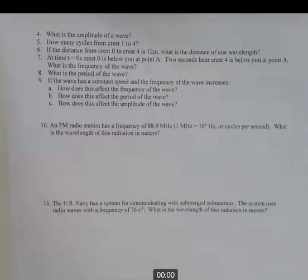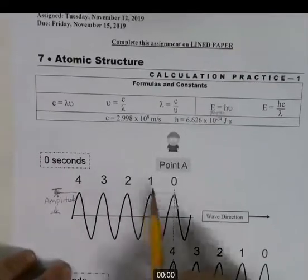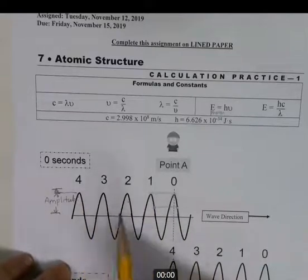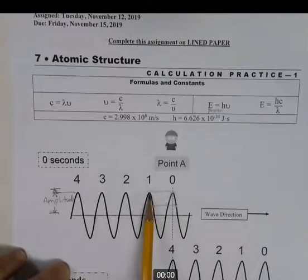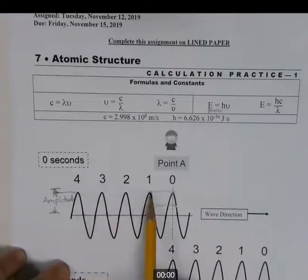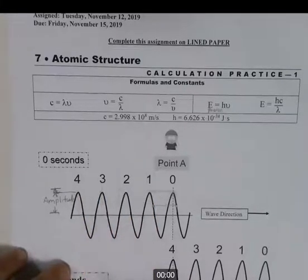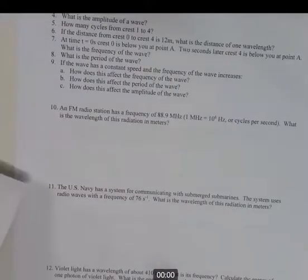How many cycles are there from crest one to crest four? Be sure to count correctly. Some students say one, two, three, four — but those are crests, not cycles. The cycles are the spaces between: one, two, three. So there are three cycles from crest one to crest four.